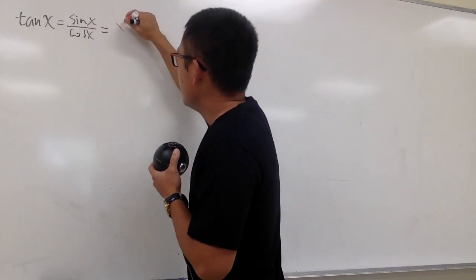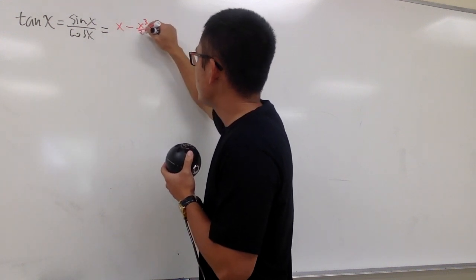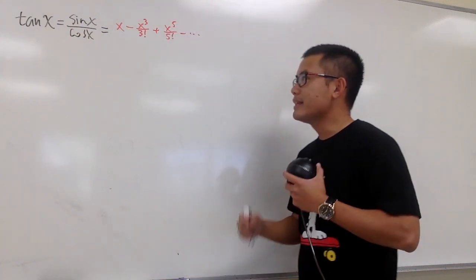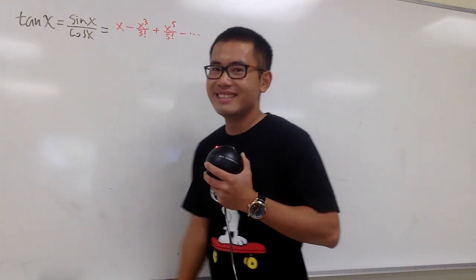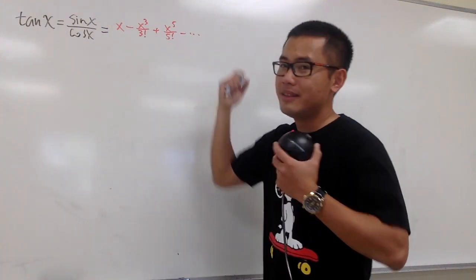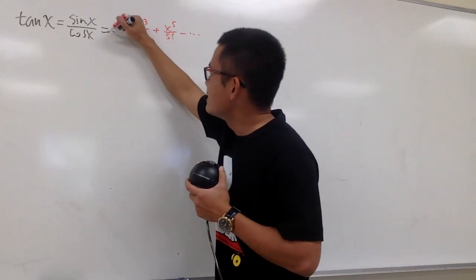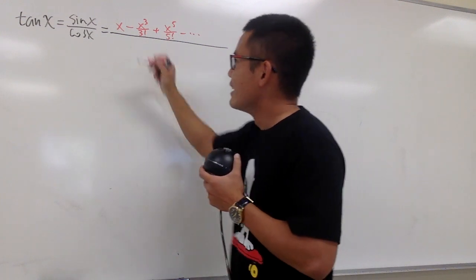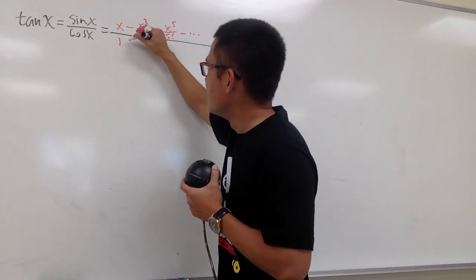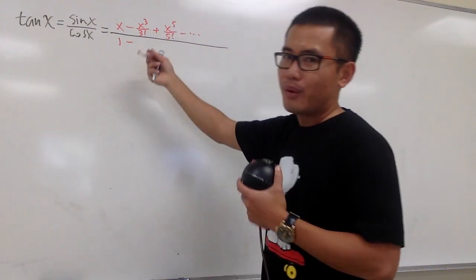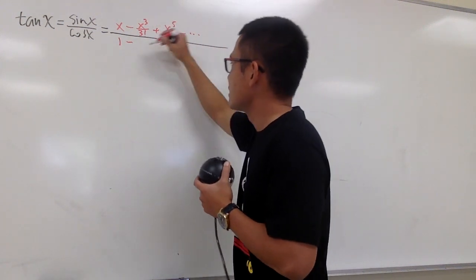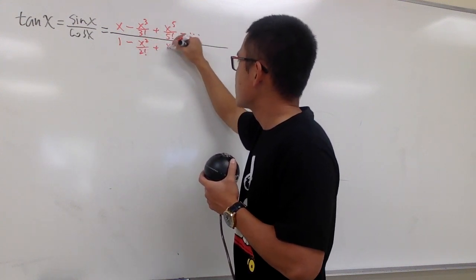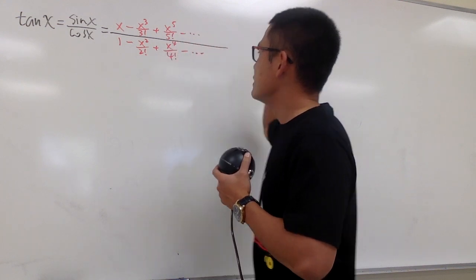Sine x is the same as x minus x to the third power over 3 factorial, plus x to the fifth power over 5 factorial, and so on. Let's just get the first three non-zero terms for tangent x, so let me put down the first three non-zero terms for sine x. Likewise for cosine x — cosine x is the even function, we start with 1, then minus x squared over 2 factorial, plus x to the fourth power over 4 factorial, and so on.